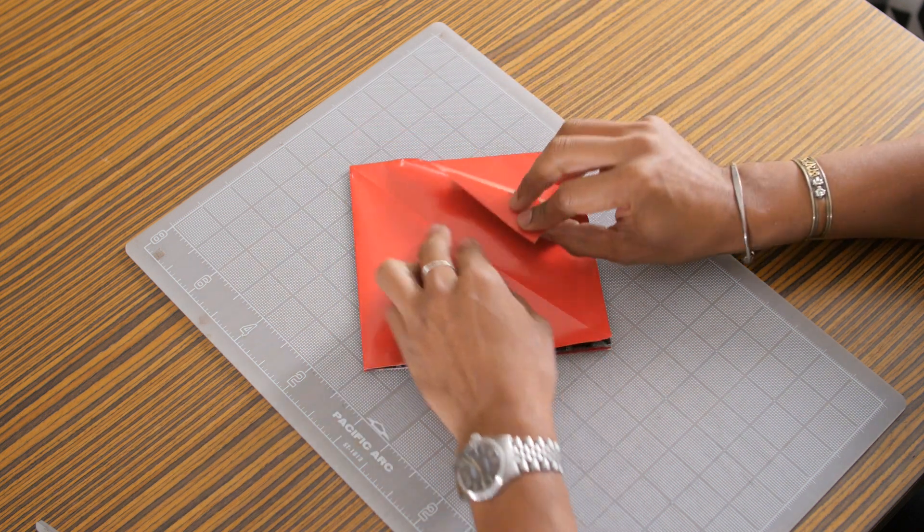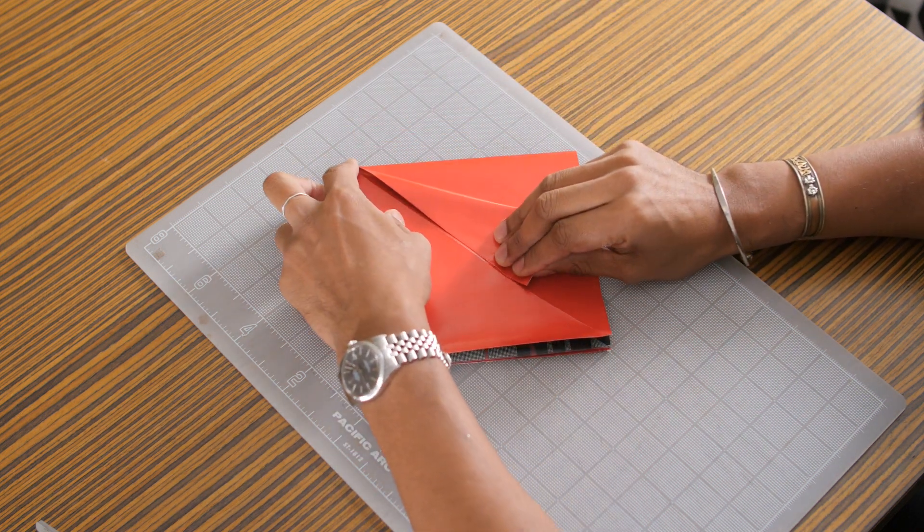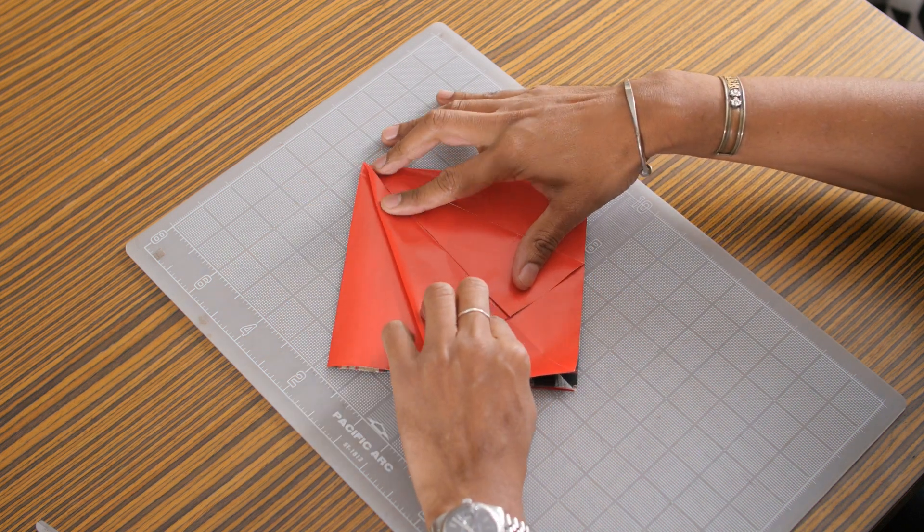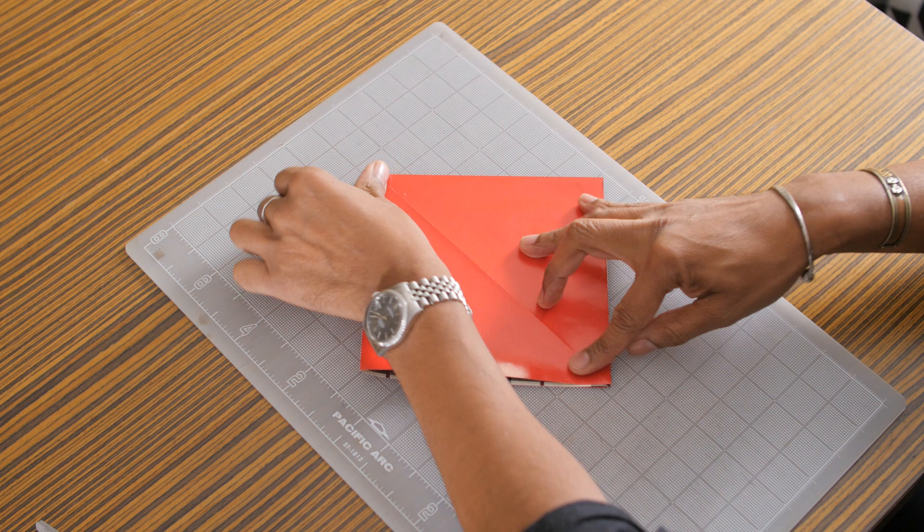Now we're going to do another set of folds starting from the outer corners and folding into the middle crease. Just like this. We're going to do that on both sides.